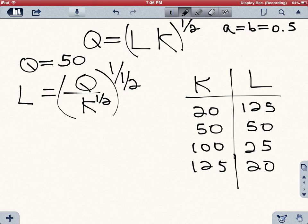Or you can produce them with even more capital, 100 units of capital and 25 units of labor, or by using even more capital and less labor, 125 and 20. So let's call these five different production possibilities A, B, C, and D.